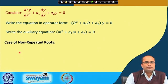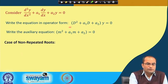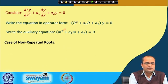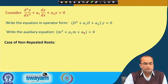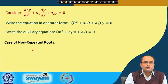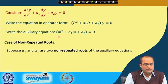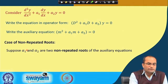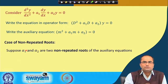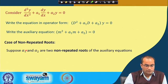The first case we consider is non-repeated roots — when the roots of this auxiliary equation are distinct. Suppose α₁ and α₂ are the two distinct non-repeated roots of this auxiliary equation. We have a second order polynomial, so we get two roots α₁ and α₂, and we assume these roots are non-repeated. What then is the solution of the given homogeneous differential equation?